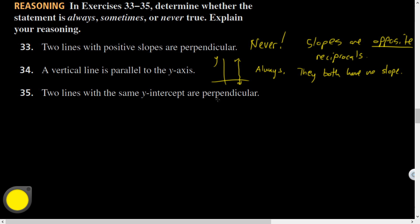Let's see. Two lines with the same y-intercept are perpendicular. Always, sometimes, or never. Let's see. So if I have two lines with the same y-intercept, it could be perpendicular, right? But also it could have been like not perpendicular, right? There's a lot of cases. So this is sometimes, only when their slopes are opposite reciprocals.